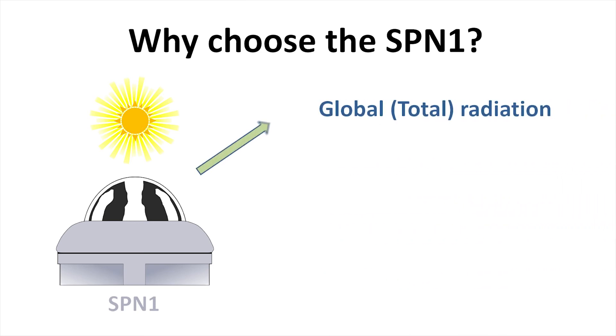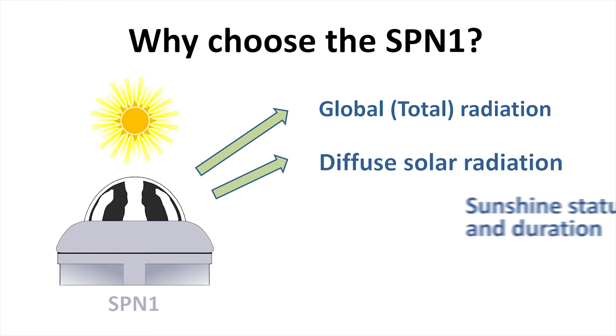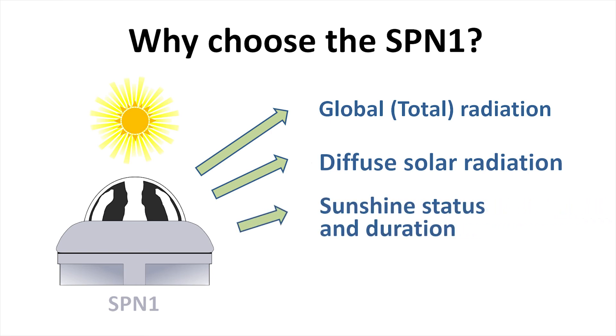The SPN1 measures global radiation from the whole sky and simultaneously measures diffuse radiation, excluding the direct solar beam. It also provides sunshine duration.